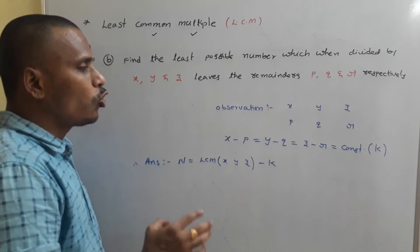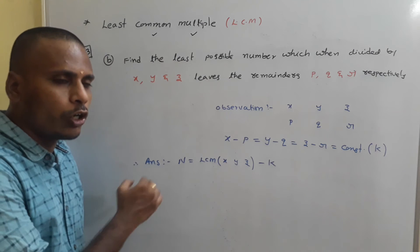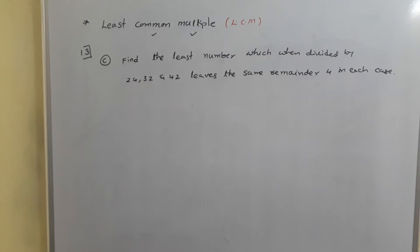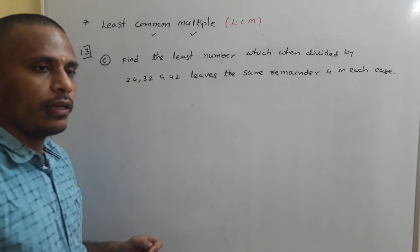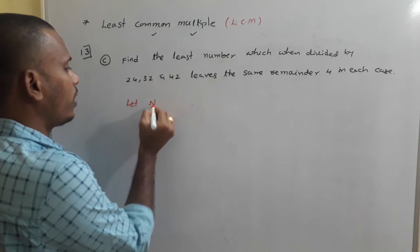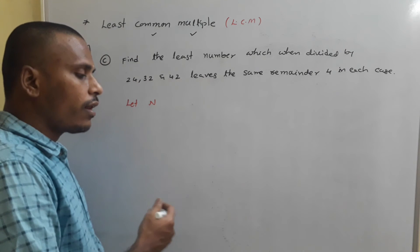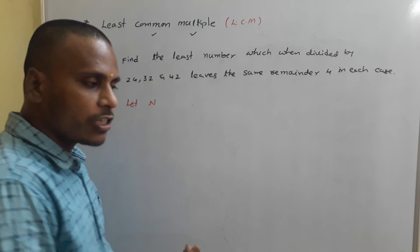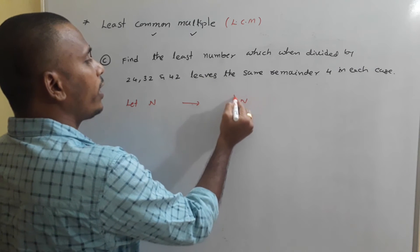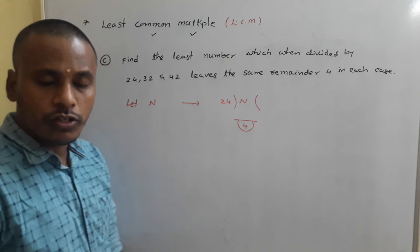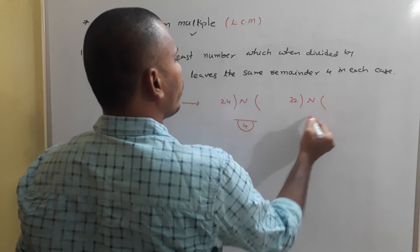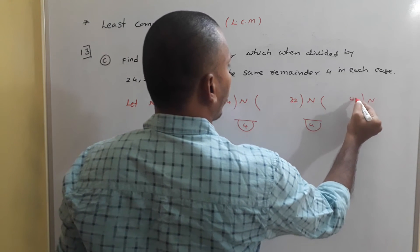Next problem: find the least number which when divided by 24, 32, and 42 leaves the remainder 4 in each case. Let the number be N. When divided by 24 it leaves remainder 4, when divided by 32 it leaves remainder 4, and when divided by 42 it leaves remainder 4.